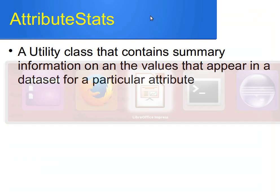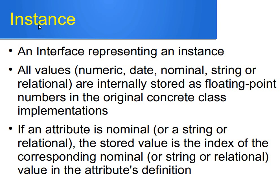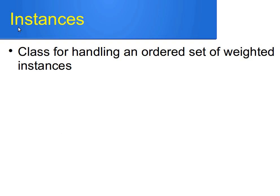The other ones I wanted to cover are the interface Instance and class Instances. The Instance interface represents one instance — all values are internally stored as floating point numbers. If an attribute is nominal, string, or relational, the stored value is the index of the corresponding value in the attribute's definition. So for a nominal attribute with maybe three or four values, instead of storing those values we give them indices 0, 1, 2, 3 and store the indices. Similarly for the class — for example, WEKA doesn't store the class names from the iris dataset but gives them indices.